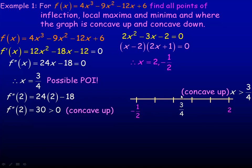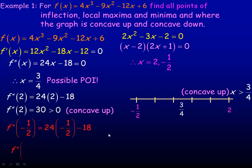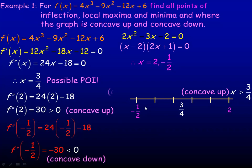Now we'll check a number below three quarters. Using x equals negative one half — putting it into the second derivative: 24 times negative one half minus 18 is negative 12 minus 18, which works out to negative 30. The fact that it's less than zero is what's important — we have a negative second derivative. So the graph at negative one half must be concave down. Below three quarters, where x is less than three quarters, the graph is concave down. So that tells us where the graph is concave up and concave down.